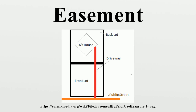An affirmative easement is the right to use another's property for a specific purpose, while a negative easement is the right to prevent another from performing an otherwise lawful activity on their property. For example, an affirmative easement might allow landowner A to drive their cattle over the land of B — A has an affirmative easement from B. Conversely, a negative easement might restrict A from blocking B's mountain view by putting up a wall of trees.